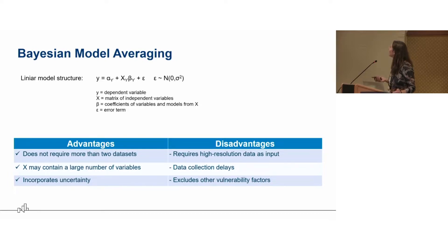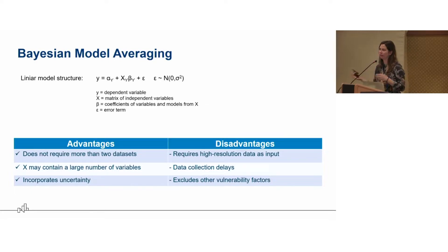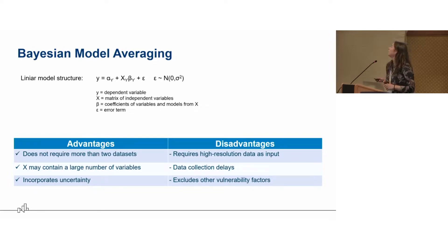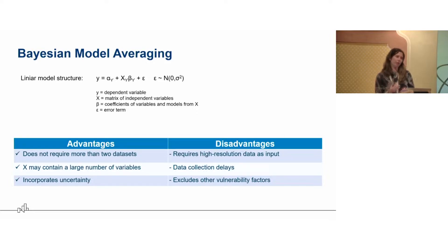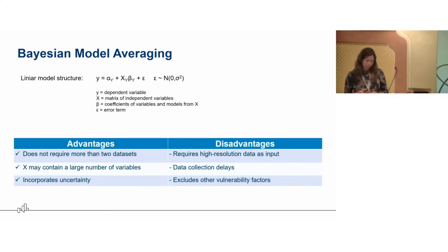Another advantage is that the model does not require too much input data from a single period in time — essentially we could do the same projections only with data from 2012, and then we use data from 2020 just to check model performance. Because we can include so many different variables, the model calculates all possible combinations and assigns them a weight based on model fit, which allows us to effectively incorporate uncertainty. This gives us a really big advantage in these projections.